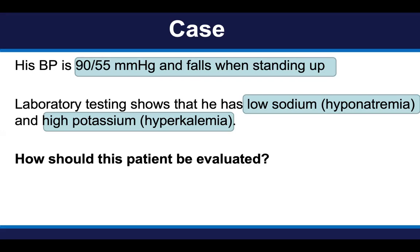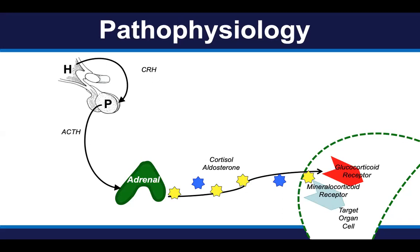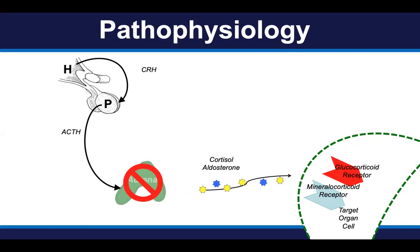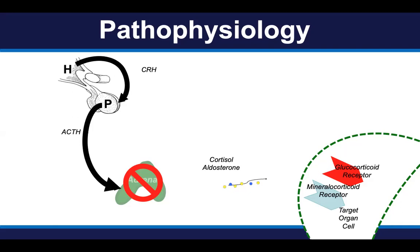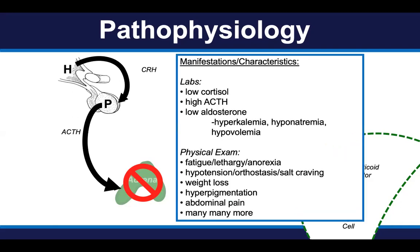How should this patient be evaluated? Let's review the pathophysiology of primary adrenal insufficiency from the first video. Primary adrenal insufficiency is due to impairment or destruction of both adrenal cortices, resulting in a deficiency in all adrenal cortical hormones. Specifically, cortisol and aldosterone are substantially reduced or not produced. Because of the lack of cortisol and negative feedback to the hypothalamus and pituitary, there is increased production of corticotropin-releasing hormone and adrenocorticotropic hormone (ACTH). The main laboratory findings are a relatively low cortisol and an appropriately high ACTH level.